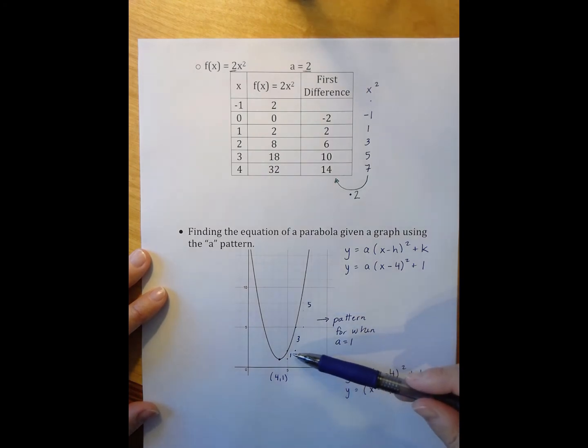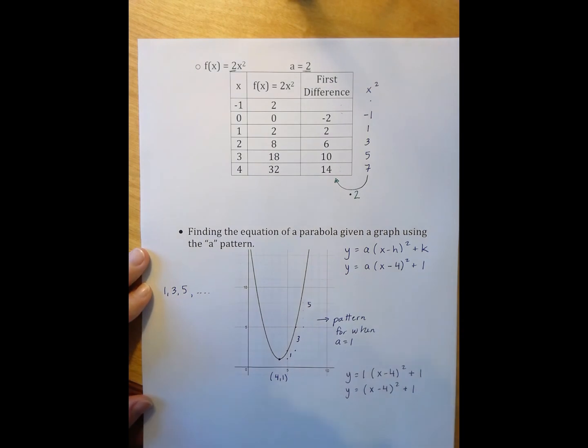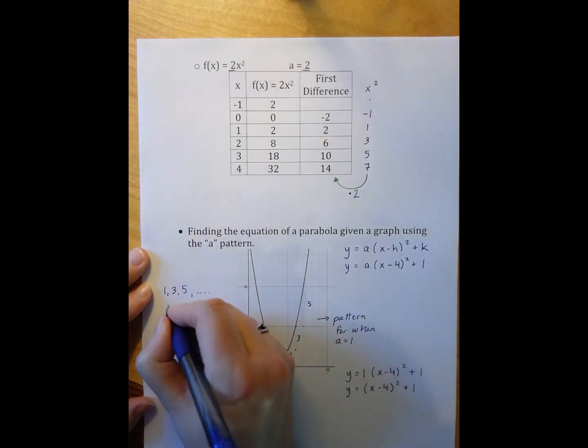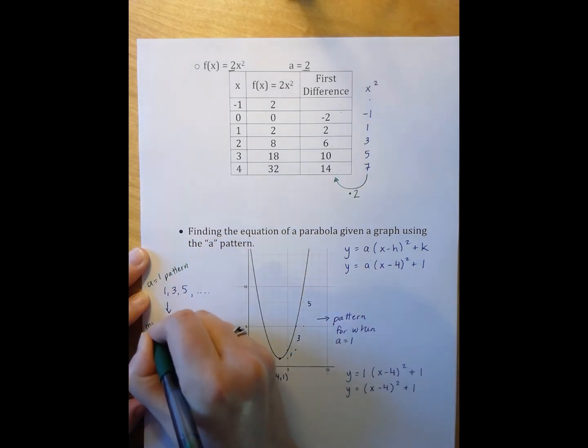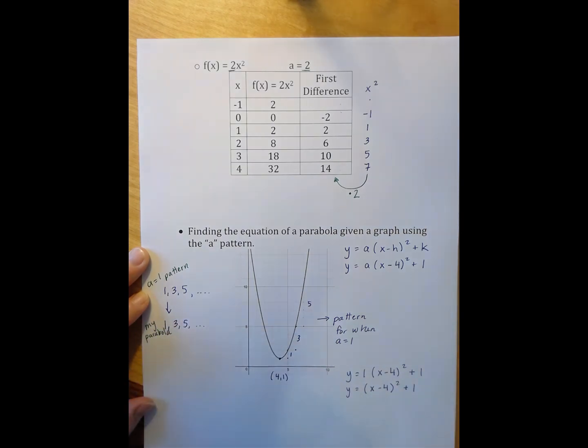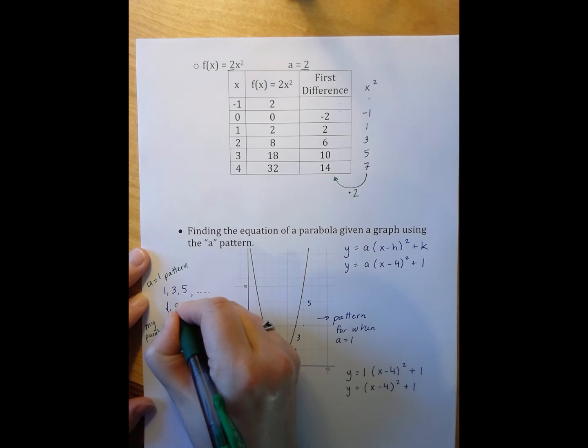If this pattern were 2, 6, 10, that would be the pattern for when a is 2. If this pattern were 3, 3 times 3, 5 times 3, 7 times 3, 9 times 3, then the a would be 3. So, what I do is I take this pattern 1, 3, 5, etc. And I need to figure out what has been done to that pattern to get the pattern that I see in the particular parabola I'm looking at. So, in my particular parabola, we would say this is the a equals 1 pattern and this is my parabola. And I have to ask myself what has happened from the a equals 1 pattern to my parabola pattern. And in this case, I've multiplied by 1. So, a equals 1.